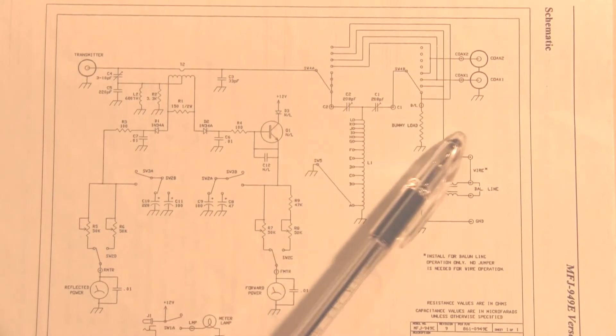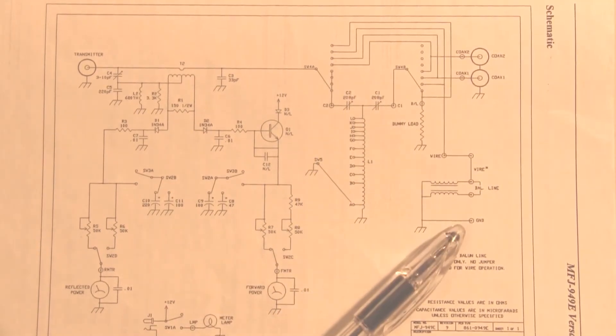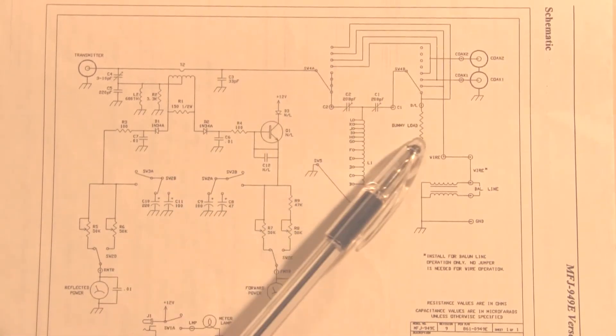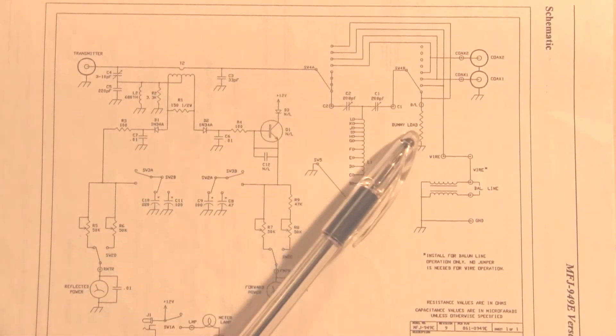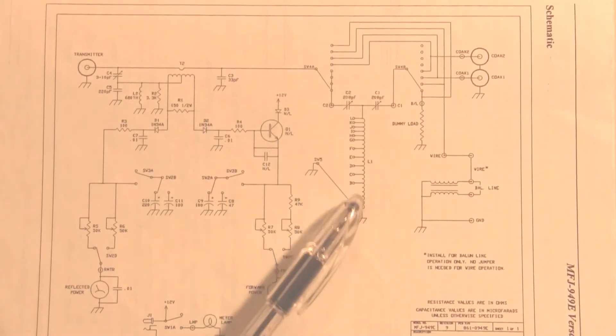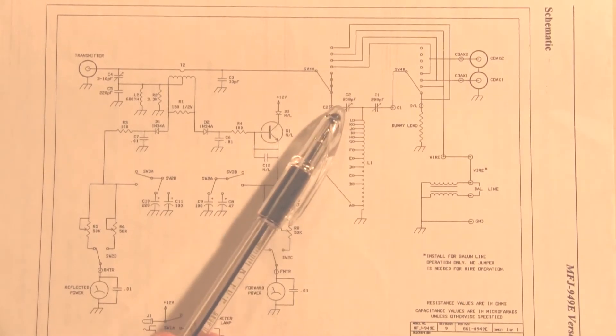This antenna tuner also has a balun in it for balanced lines. Yes, it has a dummy load, so we can hook this up to the transmitter and tune the transmitter into a dummy load as well. So here's your T network: inductor, output capacitor, input capacitor.